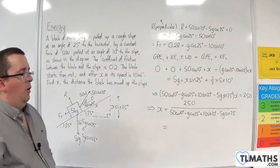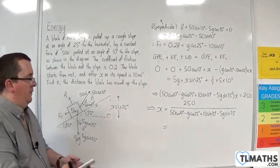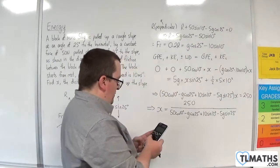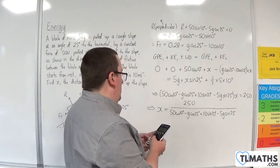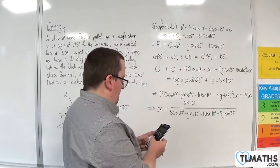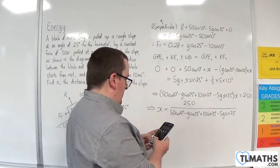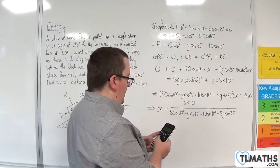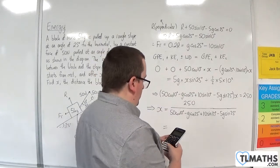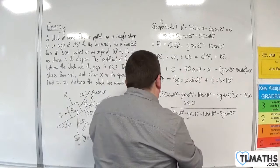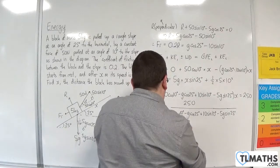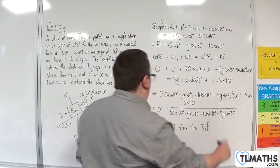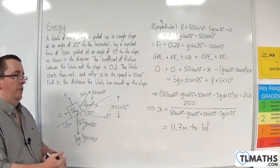Let's substitute g as 9.8: 250 over 50 times cosine 10 take away 9.8 times cosine 25 plus 10 lots of sine 10 take away 5 lots of 9.8 times sine 25. And we get 11.7 metres to 3 significant figures.